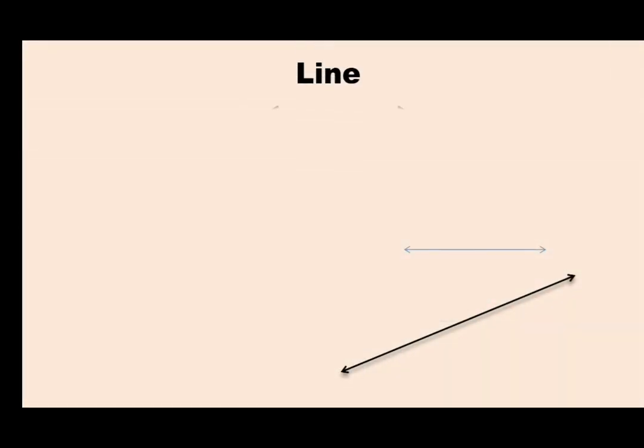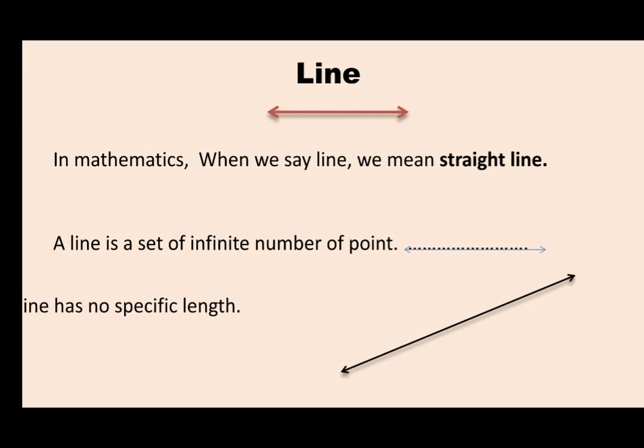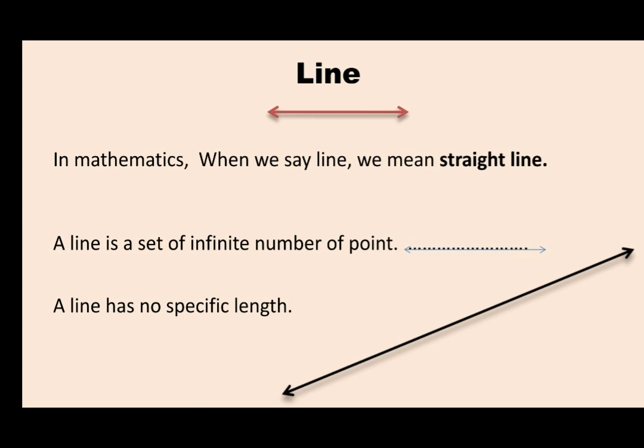Can you see here more lines? These all lines you can see are straight. In geometry, in mathematics, when we say line, we mean straight line. A line is a set of infinite number of points. A line has no specific length. It can be extended infinitely on both the ends.